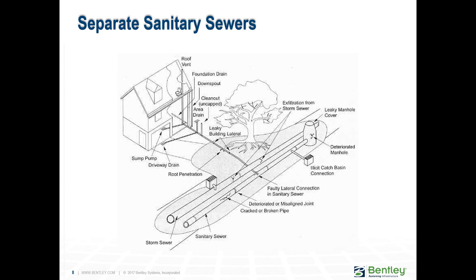Here is a picture of a separate sanitary sewer. You can see the storm sewer — typically larger in diameter — and the sanitary sewer. Sometimes there are cracks, misaligned joints, faulty connections, catch basins connected by mistake, or deteriorated manholes and leaky covers. These are all potential sources of water entering a sanitary sewer. You can also have both infiltration and exfiltration — water leaking out of your pipes.